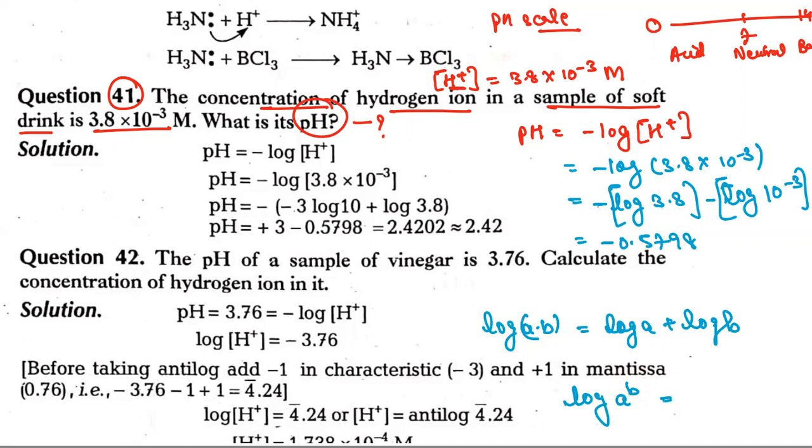If you have this form, then the power comes in front: b × log(a). And if the base and this value are the same, like log base 10 of 10, then the value equals 1. So this becomes -3 × log₁₀(10) which equals -3.